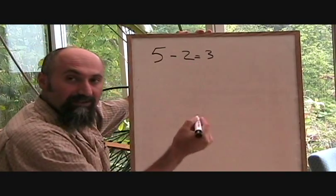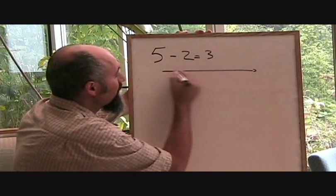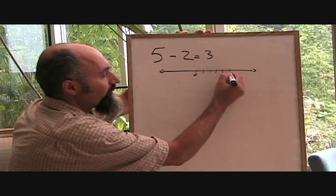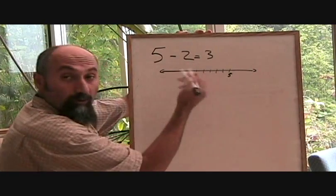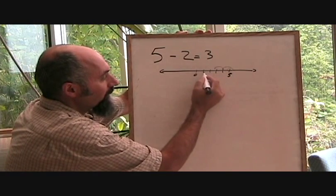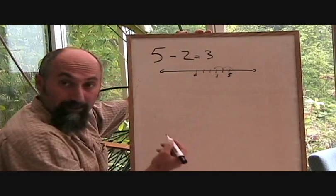Now you can think about this as a number line. If this is your 0, you start at 1, 2, 3, 4, 5, what you're doing, you're going back 2. So you're going 1, 2, so you end up at 3, simple as that.